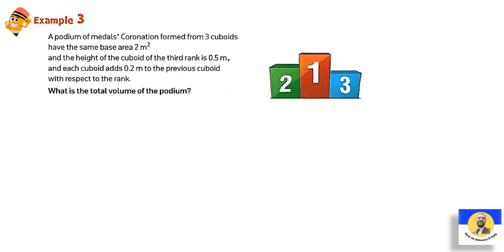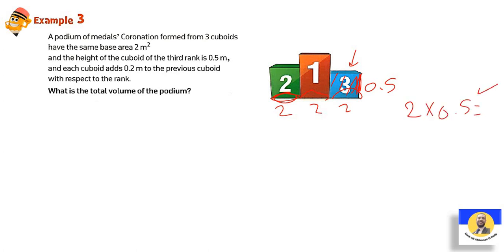Next question: a bottom of a middle coordination formed from 3 cuboids, all having the same base area of 2 m². So the first has base area 2 m², the second 2 m², the third 2 m². The third one has height 0.5. To find its volume: 2 times 0.5. We use base area times height.